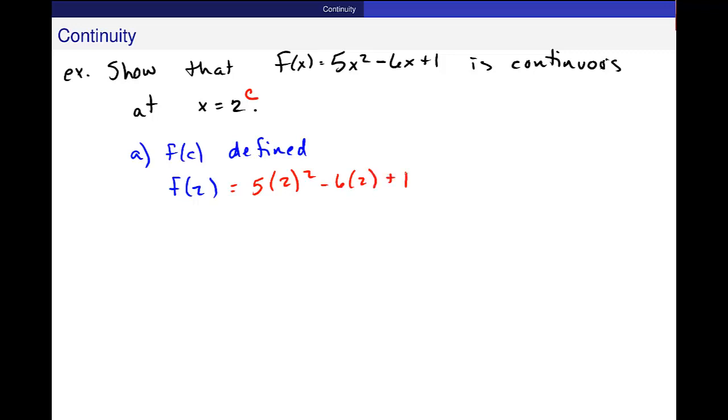This is just a quadratic. There's no reason why it wouldn't be defined. And I get 9. Is that what you guys get? 5 times 4 is 20 minus 12 is 8 plus 1 is 9. So yes, green check, it meets part A condition.